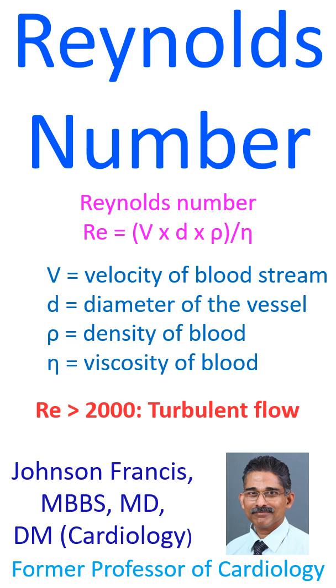Now we know the parameters which will determine a murmur. Velocity of bloodstream, diameter of the vessel, and density of the blood increase the murmur, while viscosity of blood has an inverse relationship.